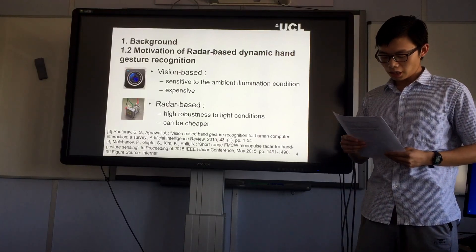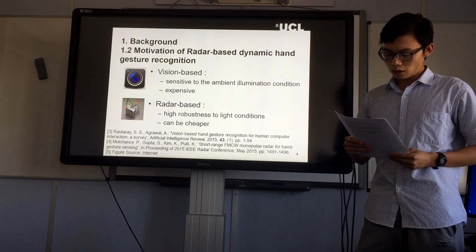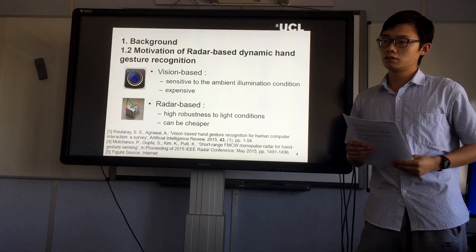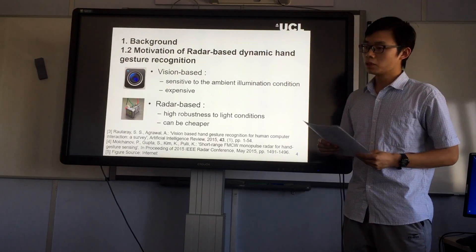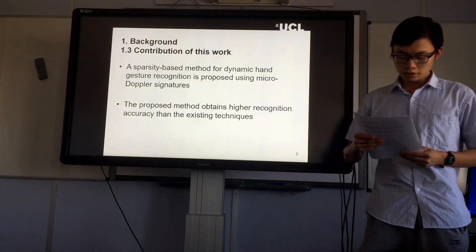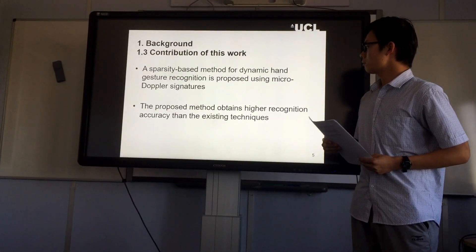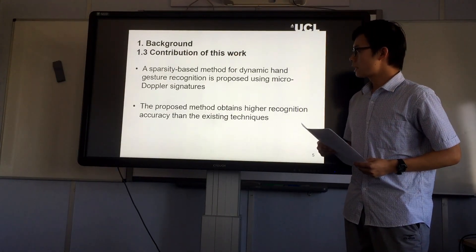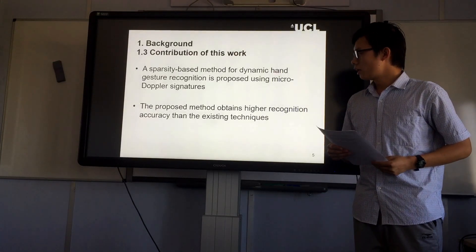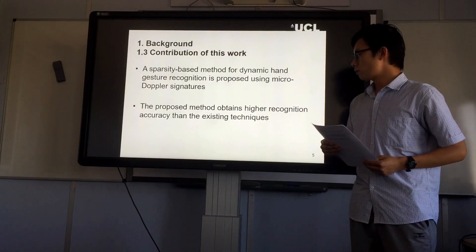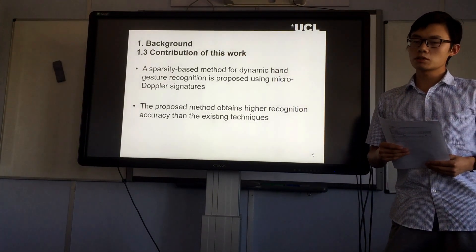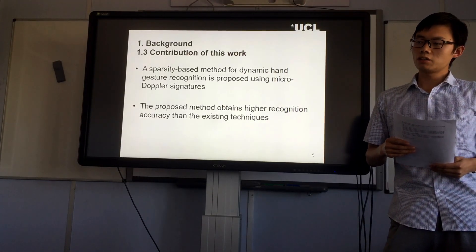In contrast, a radar-based system can capture dynamic hand gesture with faster speed, and the hardware can be cheap. Most importantly, a radar can work in different conditions. So a radar-based system is very meaningful for real applications. In this work, a sparsity-based method for Dynamic Hand Gesture recognition is proposed, and the micro-Doppler signatures are extracted by compressed sensing techniques. The experiment results show that the proposed method obtains higher recognition accuracy than existing techniques, including principal component analysis and singular value decomposition.